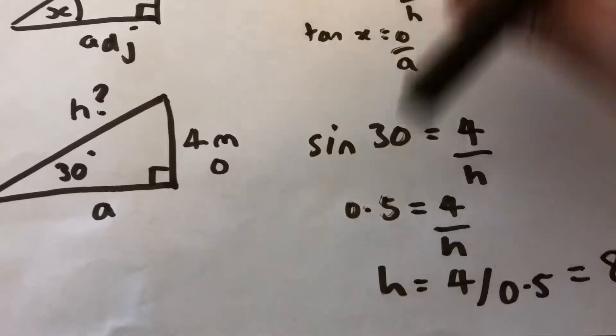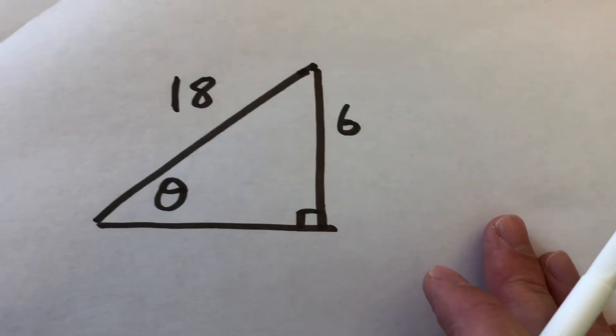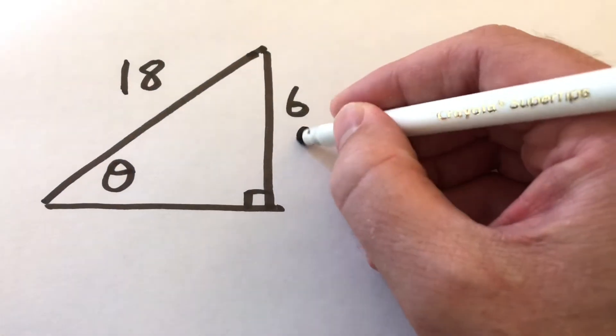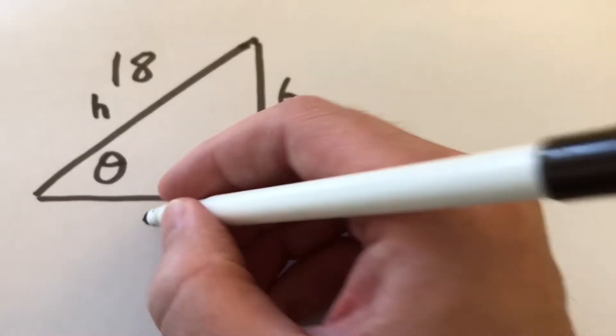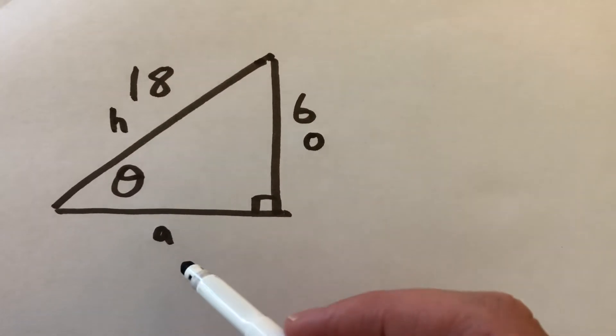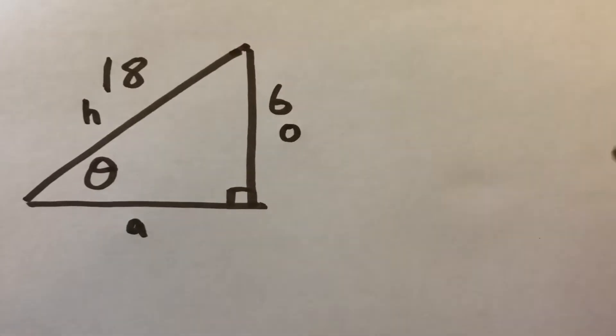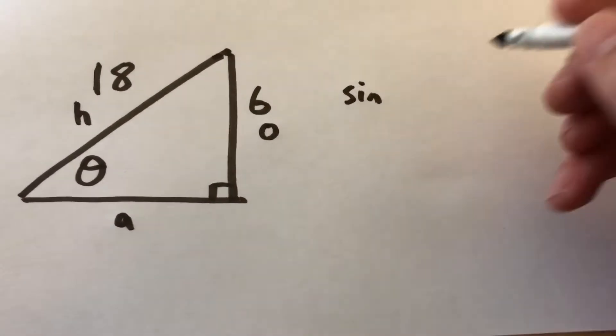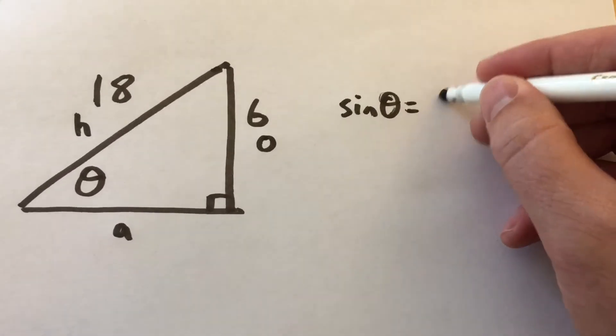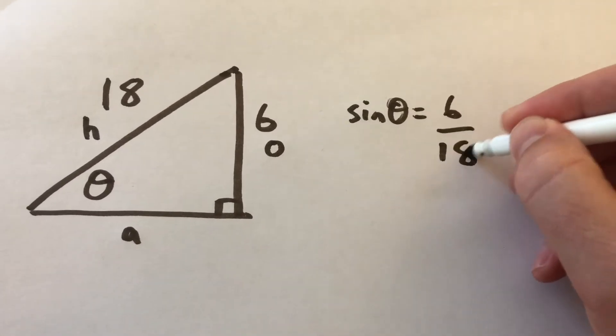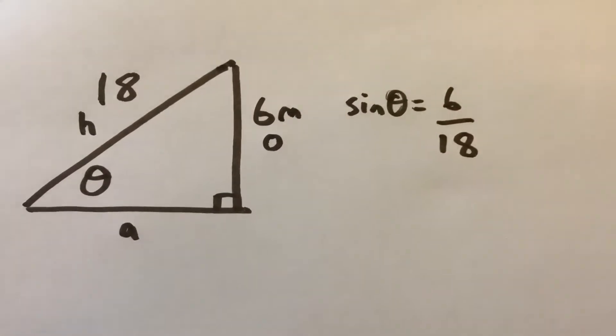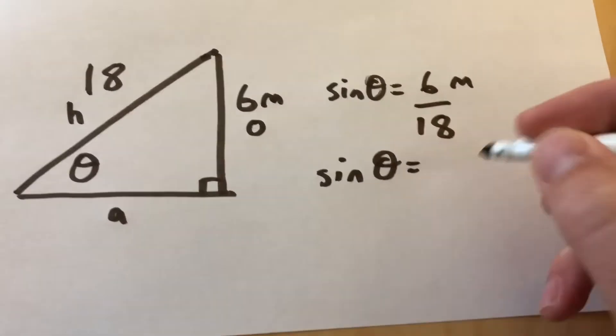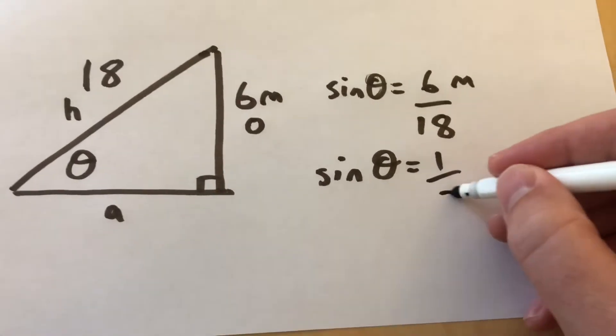Now let's look at a question where we're finding the angle. I've called it theta here. First thing we do: label it - opposite, hypotenuse, adjacent. We don't need the adjacent in this case. We've got opposite and hypotenuse, so I've chosen to use sine again. Set up the equation, that's the second thing to do. Sine of theta is opposite over hypotenuse. I haven't got a unit here, so let's make it meters again. Sine of theta is going to be 1 over 3.